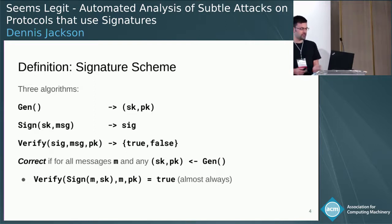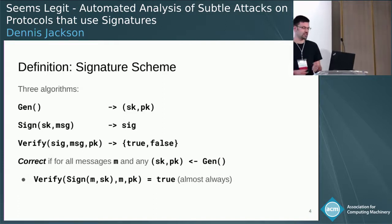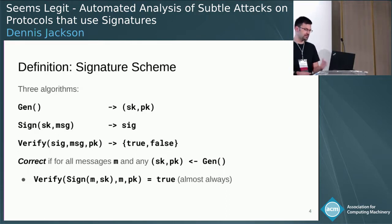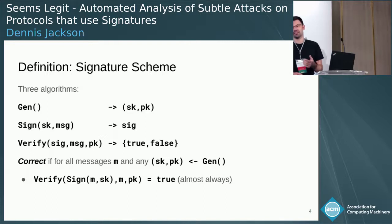You can generate a public key and a secret key, you can generate a signature, you can verify a signature - that's really pretty much all you're allowed to do by the standard definition. And the important thing here is that one important definition is that it must be correct: if you generate a public key and a signature in the right way and you verify it, you get back true.